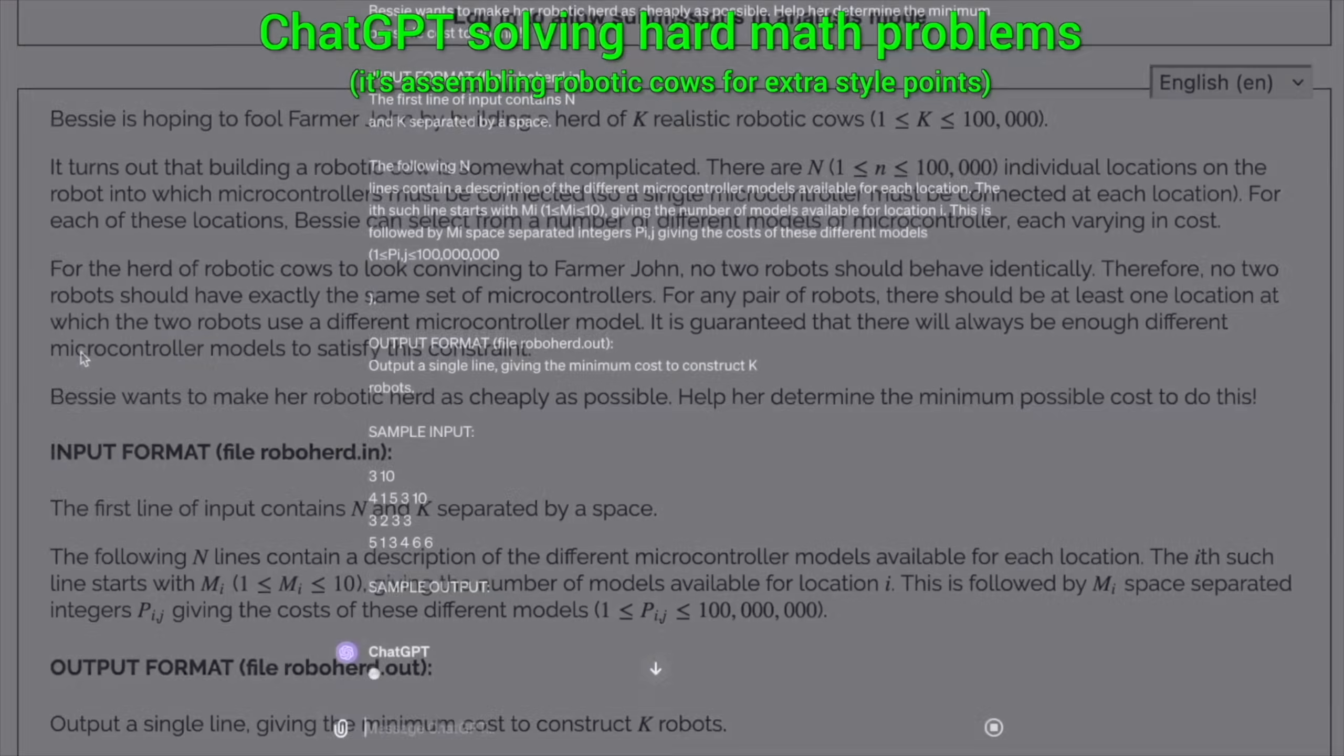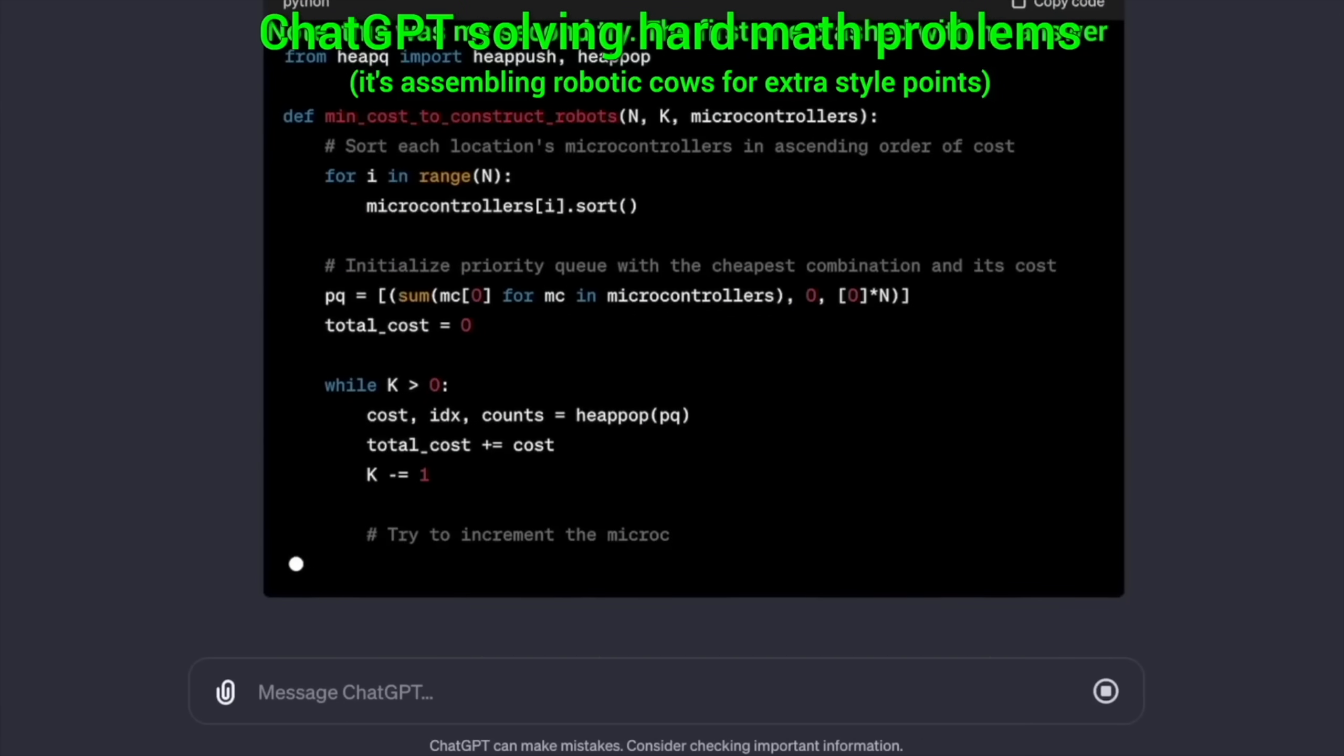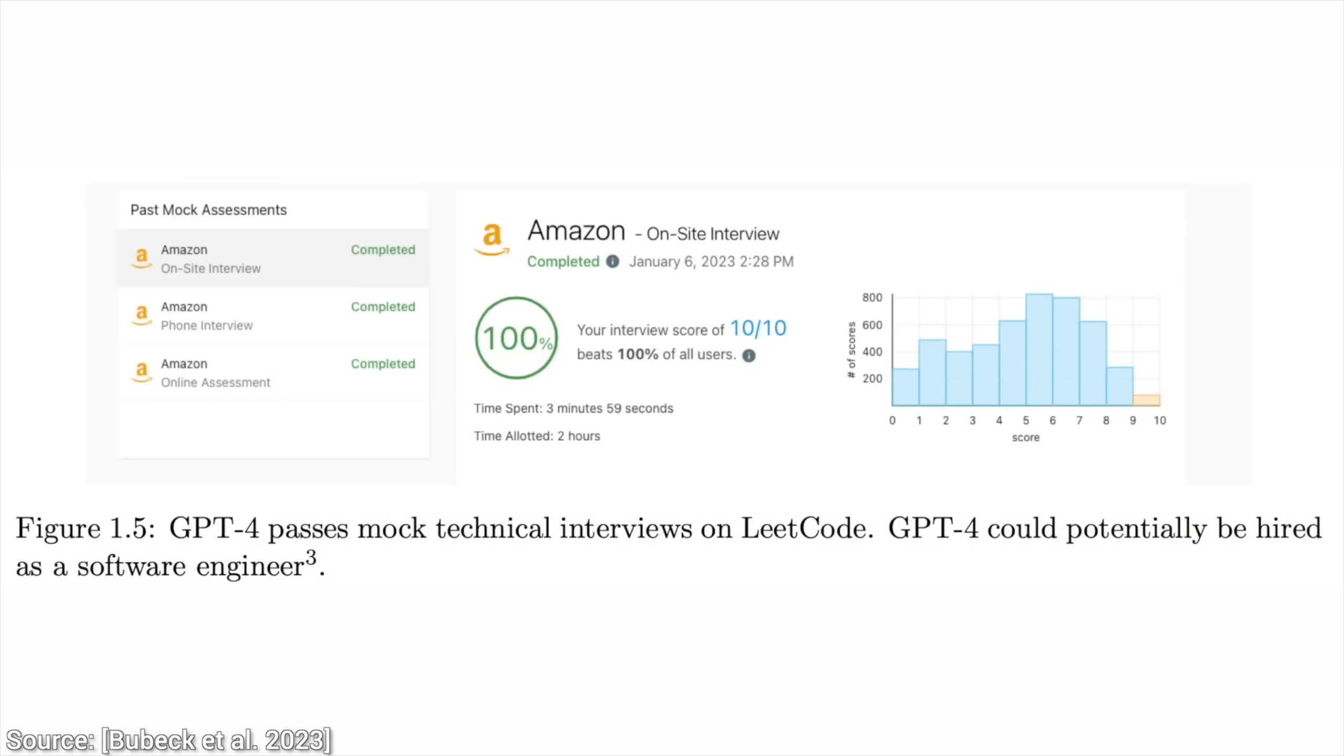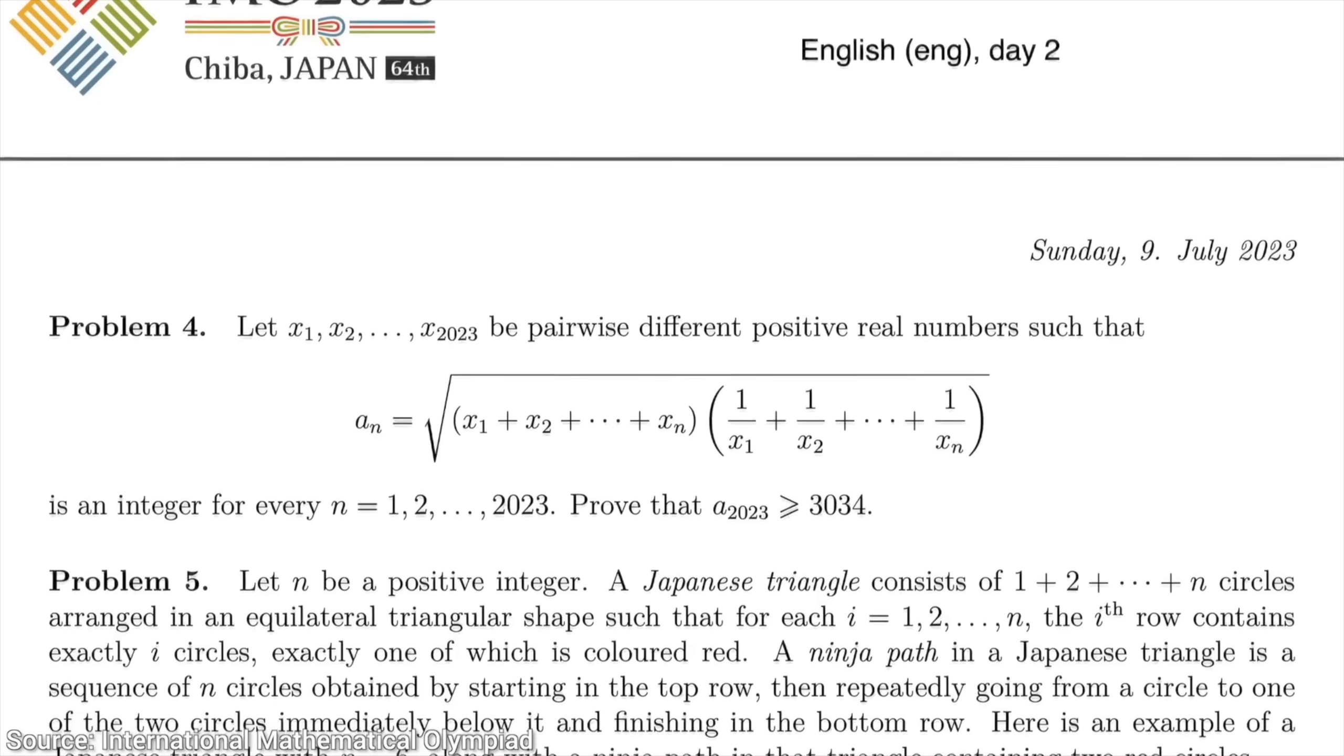ChatGPT-like AIs are generally really good at so many things. They can ace the bar exam, get hired to Amazon for their coding skills, they can also solve pretty hard math problems.